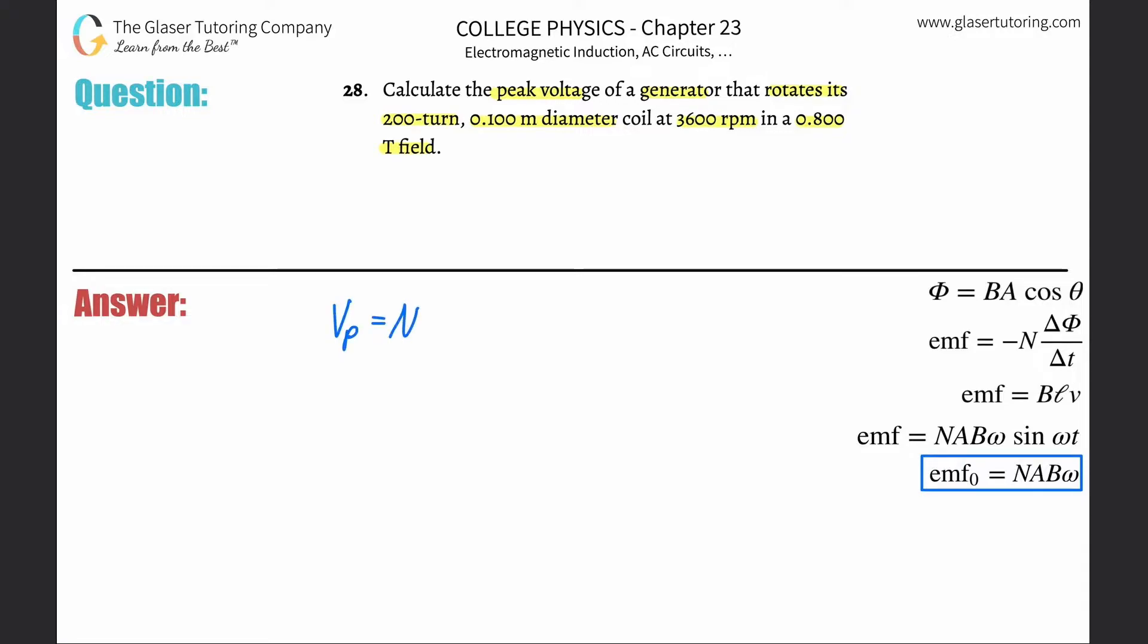That equals the number of turns of the coil, multiplied by the cross-sectional area of the coil, multiplied by the external magnetic field that the coil is experiencing, multiplied by the angular velocity omega. If you're not familiar with angular velocity, check out the circular motion chapter.